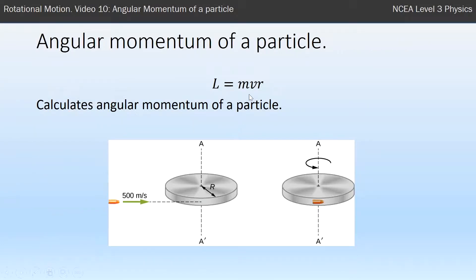There is a formula for particles that travel in a straight line that end up attaching themselves to something and causing it to spin. That is L for angular momentum equals the mass times the velocity times the radius that it hits at. This calculates that angular momentum.